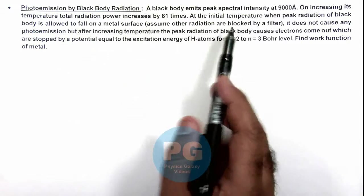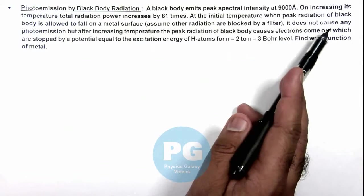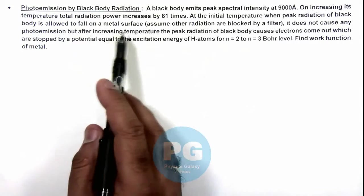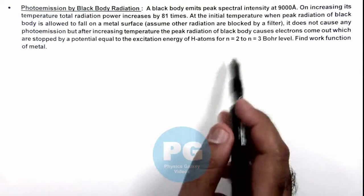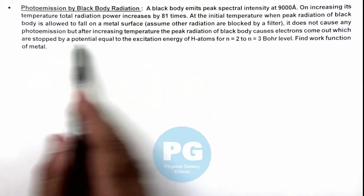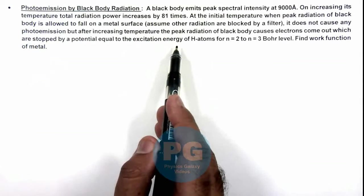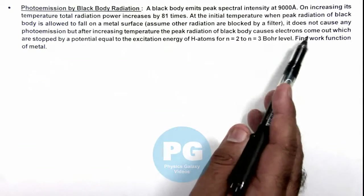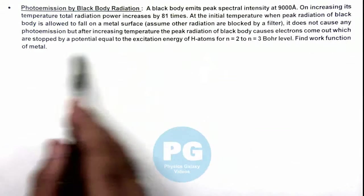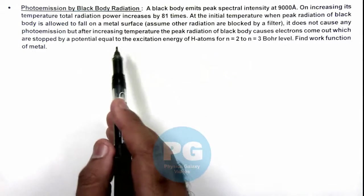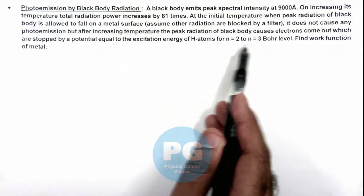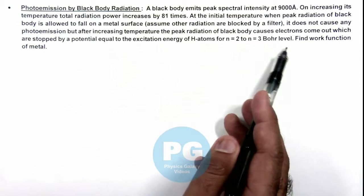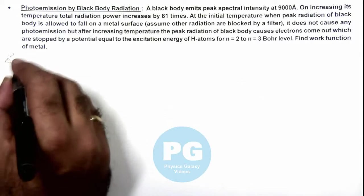At the initial temperature, when peak radiation of black body is allowed to fall on a metal surface, assuming other radiations are blocked, it does not cause any photoemission. But after raising the temperature, the peak radiation causes electrons to come out which are stopped by a potential equal to the excitation energy of hydrogen for n=2 to n=3 level. Here we are required to find the work function of the metal surface.